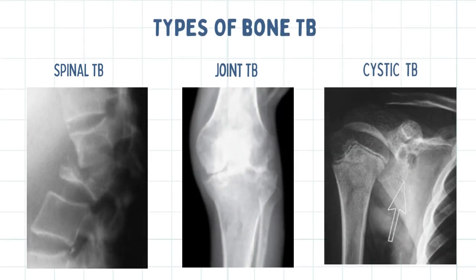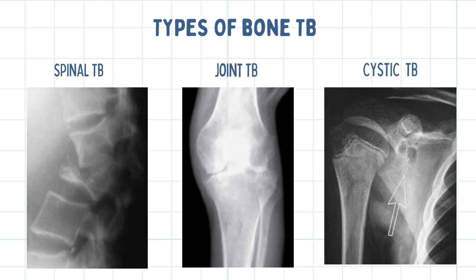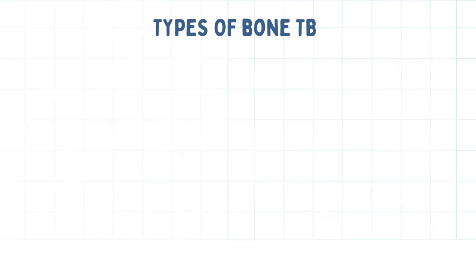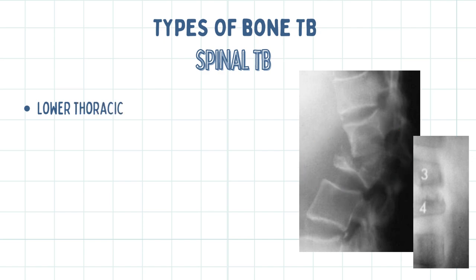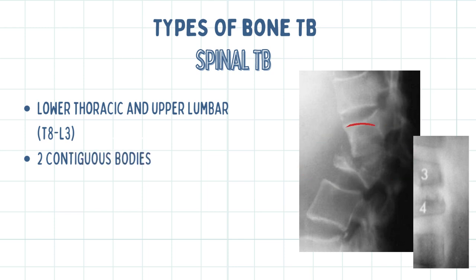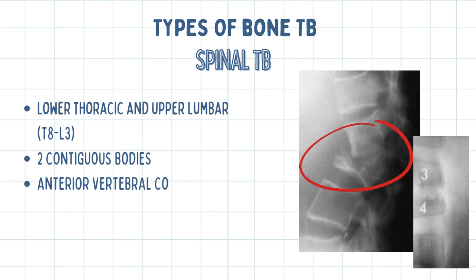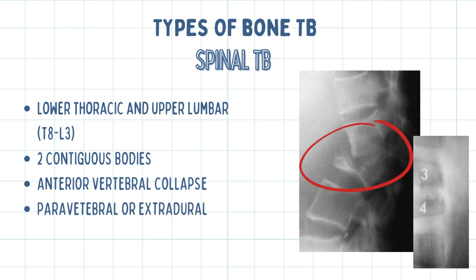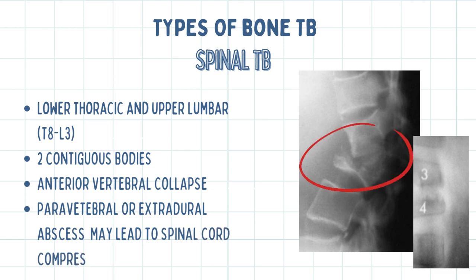Bone TB manifests in three ways: spinal TB, joint TB, and cystic TB of the bone. With spinal TB, the most common area of involvement is the lower thoracic and upper lumbar spine, T10 to L3. Infection starts in the anterior aspect of the vertebral body in the region of the disc, and at least two contiguous bodies are involved. Destruction of the vertebral bodies causes anterior collapse leading to angular deformity of the spine. The infection can produce a paravertebral or extradural abscess, which can result in spinal cord compression and subsequent cord dysfunction with paresis and paraplegia.